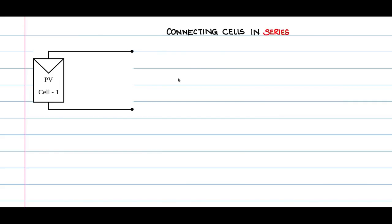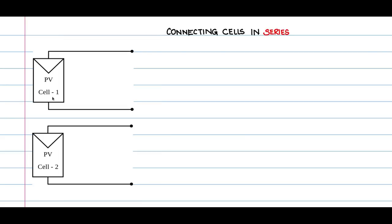A PV cell is represented in a standard fashion. We take cell 1 and another cell, cell 2. To connect these two cells in series, we connect the two middle terminals together. Cell 1 has a plus and minus, and cell 2 has a plus and minus. We then connect an external load — represented here as a simple resistive load, though it could be any compatible load.